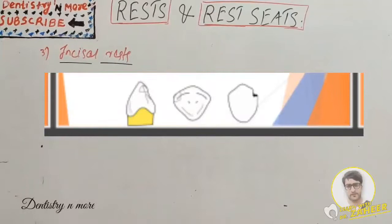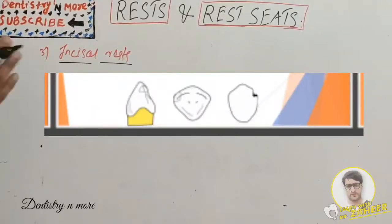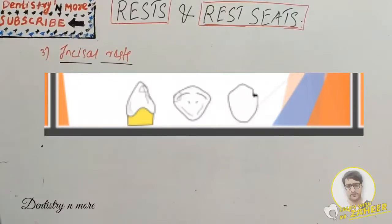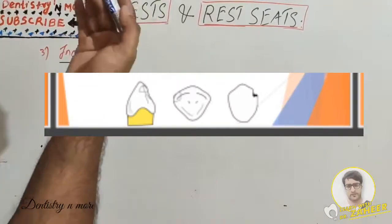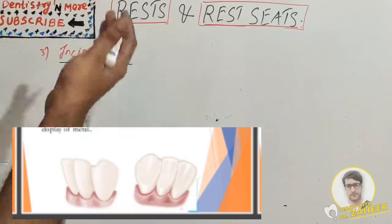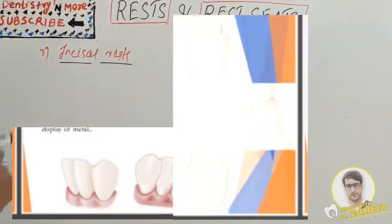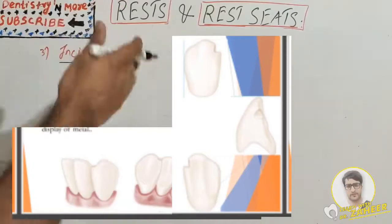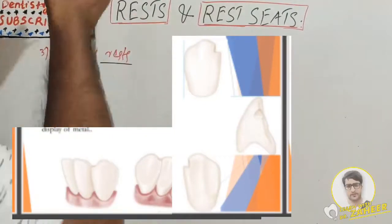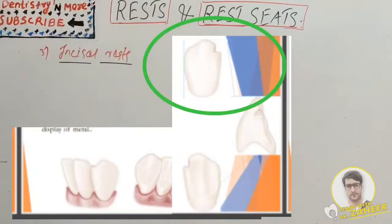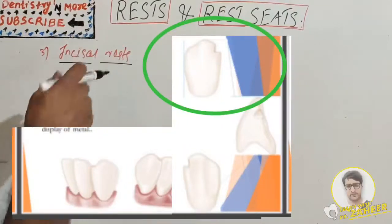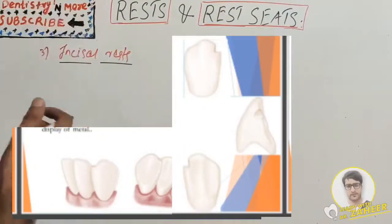The incisal rest is more applicable to the mandibular canine. This type of rest provides definite support with relatively little loss of tooth structure and little display of metal, unlike the occlusal rest. The labial view demonstrates inclination of the floor of the rest seat, which allows forces to be directed along the long axis of the tooth as nearly as possible. The proximal edge of the rest seat is rounded rather than straight.